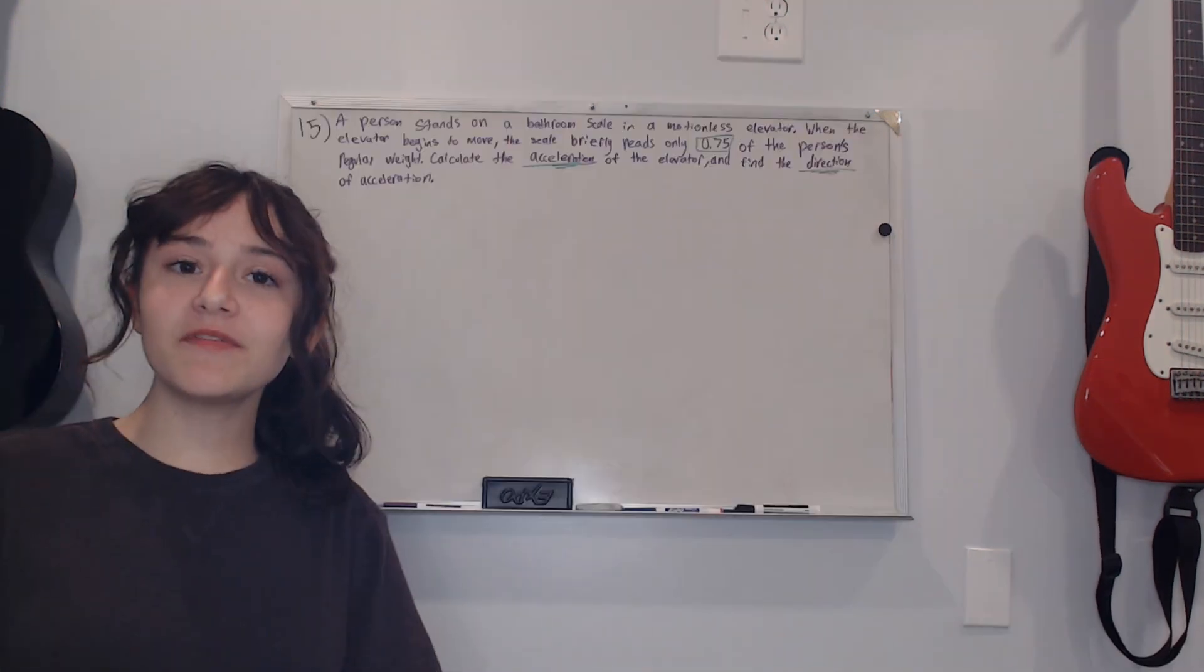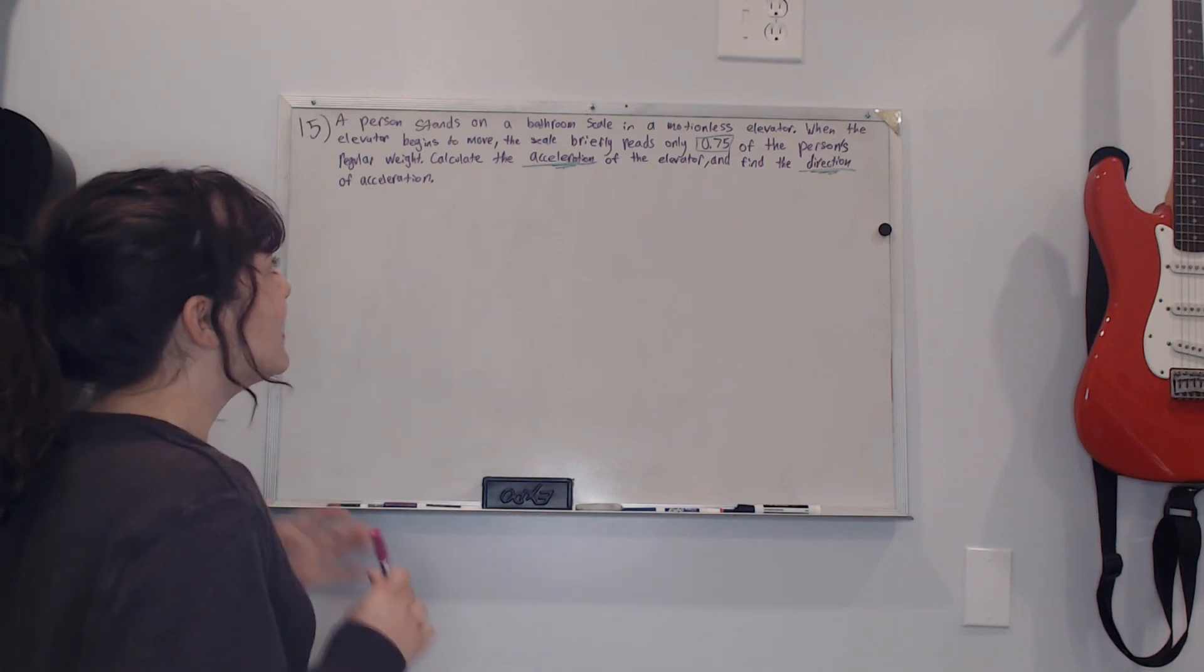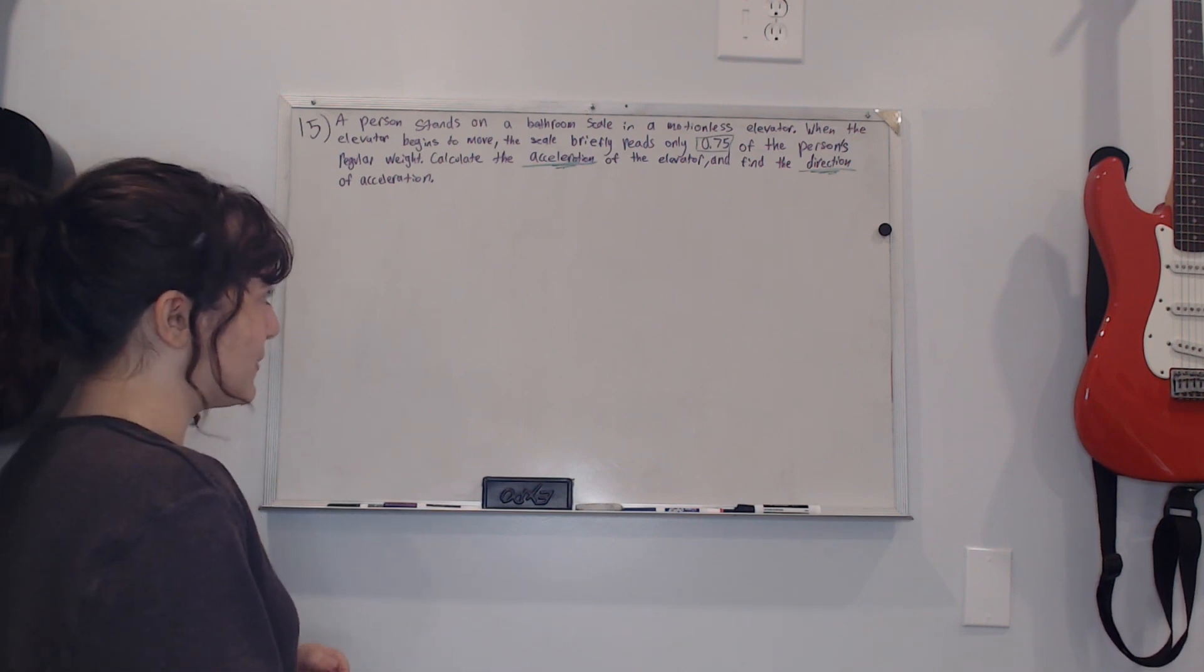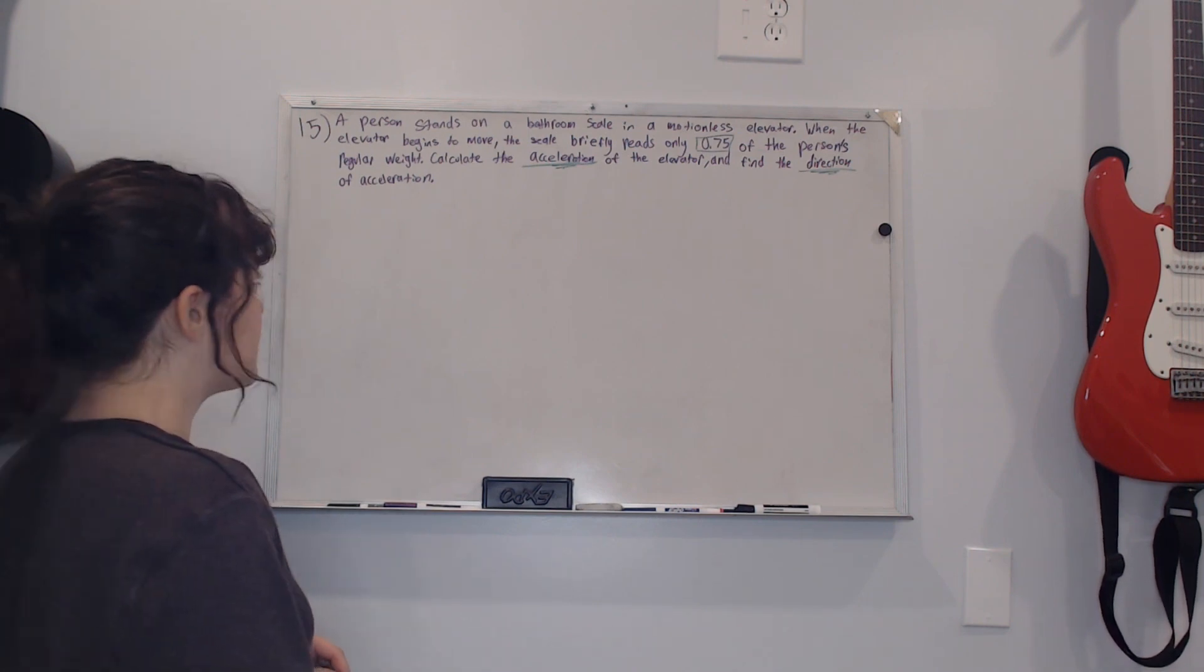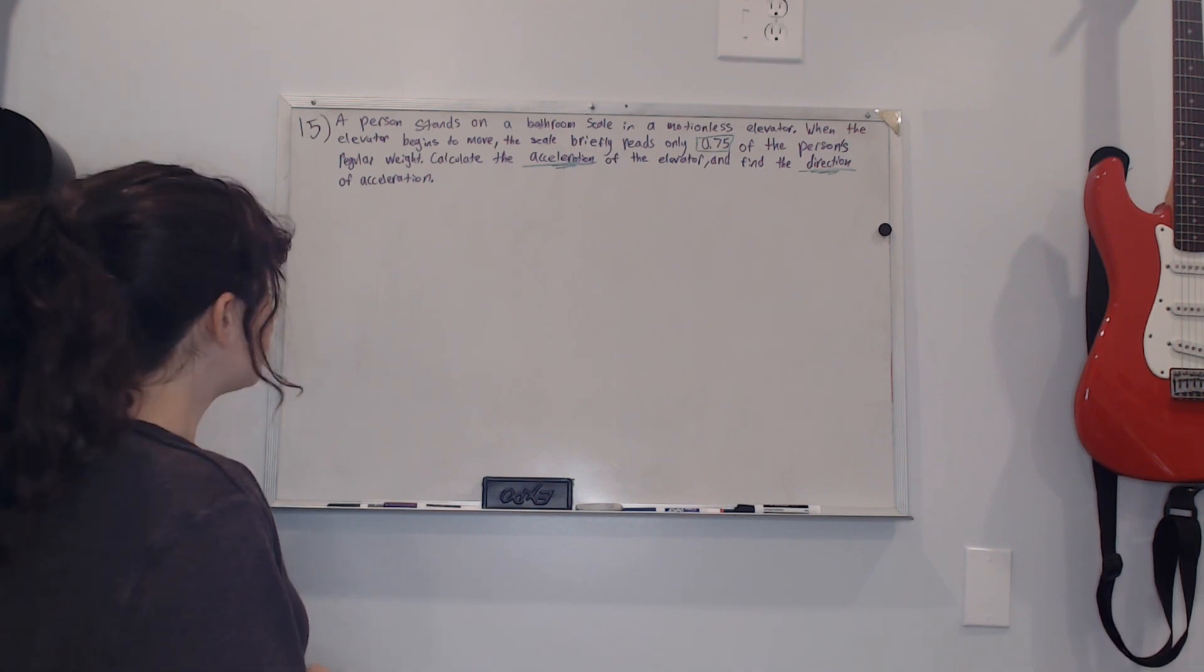This is number 15 on the homework and it says a person stands on a bathroom scale in a motionless elevator. When the elevator begins to move, the scale briefly reads only 0.75 of the person's regular weight. Calculate the acceleration of the elevator and find the direction of acceleration.